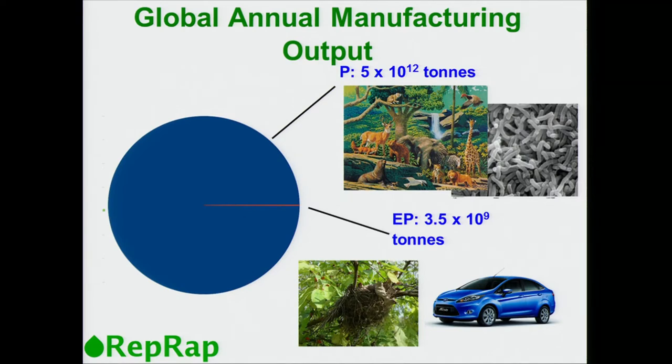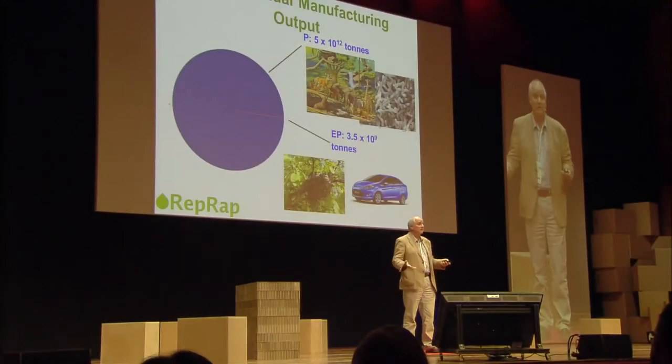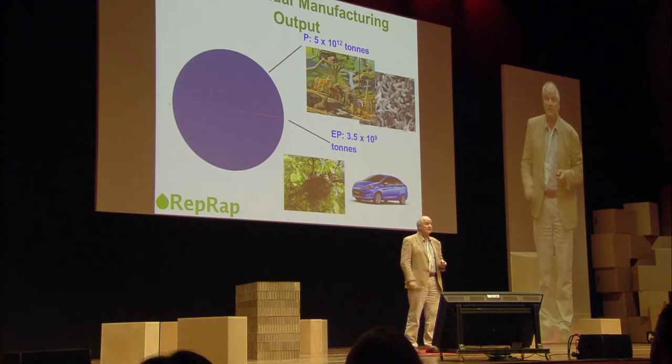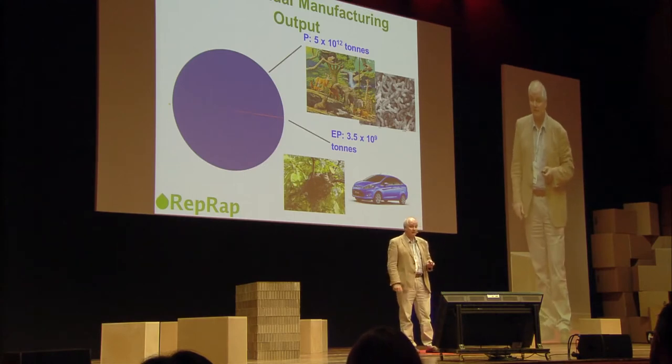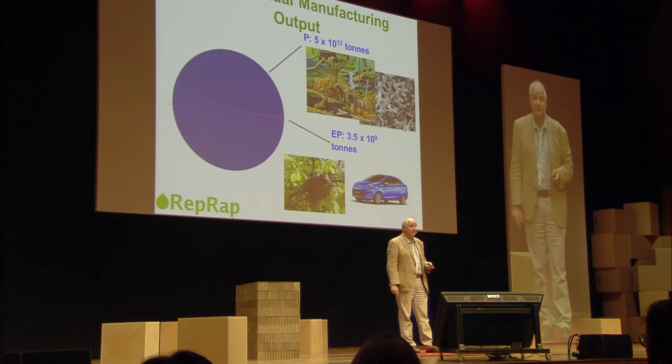EP stands for extended phenotype, and that's objects like birds' nests. Birds' nests are made by birds. Cars are made by people. EP is extended phenotype, and that is insignificant compared to the first type of manufacturing.